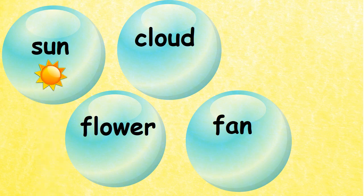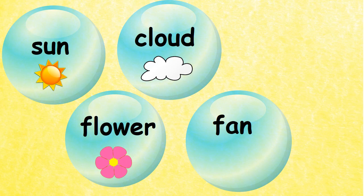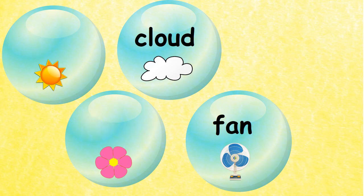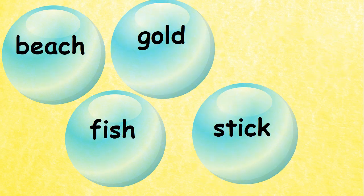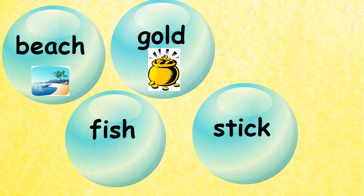We have sun, cloud, flower, and fan. Which two words are we going to use? We are going to use sun and flower. Sun and flower will give you sunflower. So our compound word is sunflower.